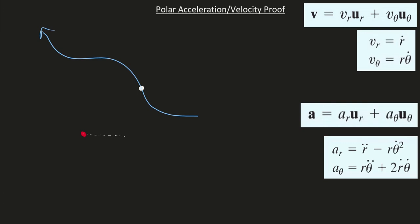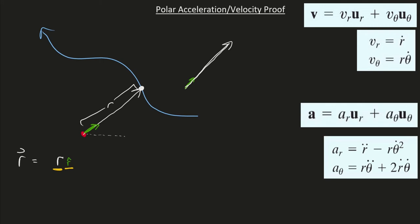Let's say our object is right here. We can express the position of this object as a vector — we'll call this the r vector — equal to some scalar r multiplied by a unit vector r̂. R̂ is going to be this unit vector here. If I take a vector and multiply it by a scalar, it lengthens or contracts that vector. So we're taking r̂ of length one and lengthening it by r, which is just this length right here, and that creates our full position vector.